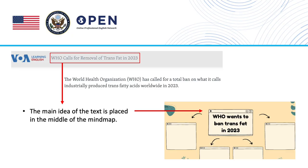A typical mind mapping activity, for example, would be having students identify main and supporting ideas of a reading by placing the main idea in the middle of the map and branching out from there. In news articles, the main idea is usually stated in the title or somewhere in the first paragraph. In the VOA article, we can find the main idea both in the title and first sentence, so we put that in the middle of the mind map.